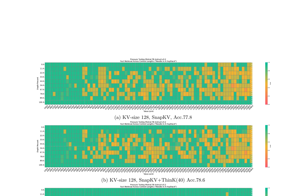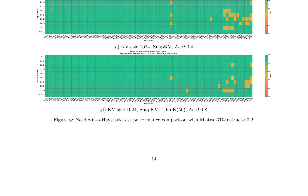The paper also includes a needle-in-a-haystack test to evaluate the model's ability to retrieve facts from long contexts. Overall, the paper provides a detailed analysis of the strengths and weaknesses of these models in various NLP tasks and highlights the importance of considering different factors such as cache size and pruning ratio when selecting a model for a specific task.